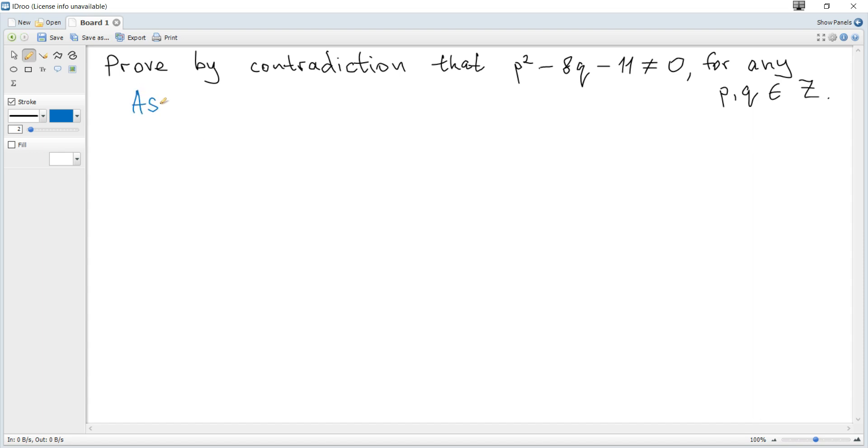Assume there exists P, Q ∈ integers such that P² - 8Q - 11 = 0. We need to show that this equation is not true, so a contradiction arises here. How to do that?